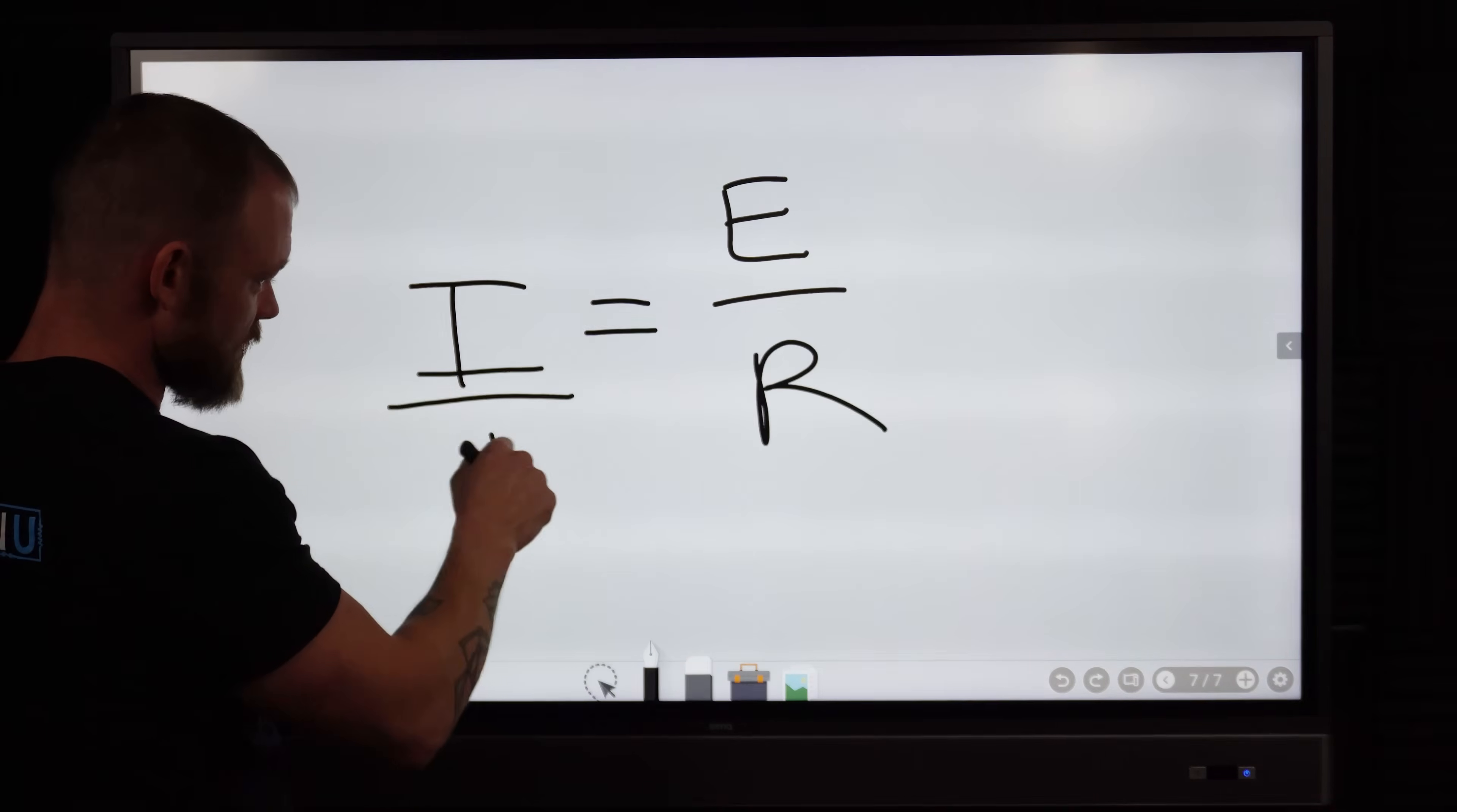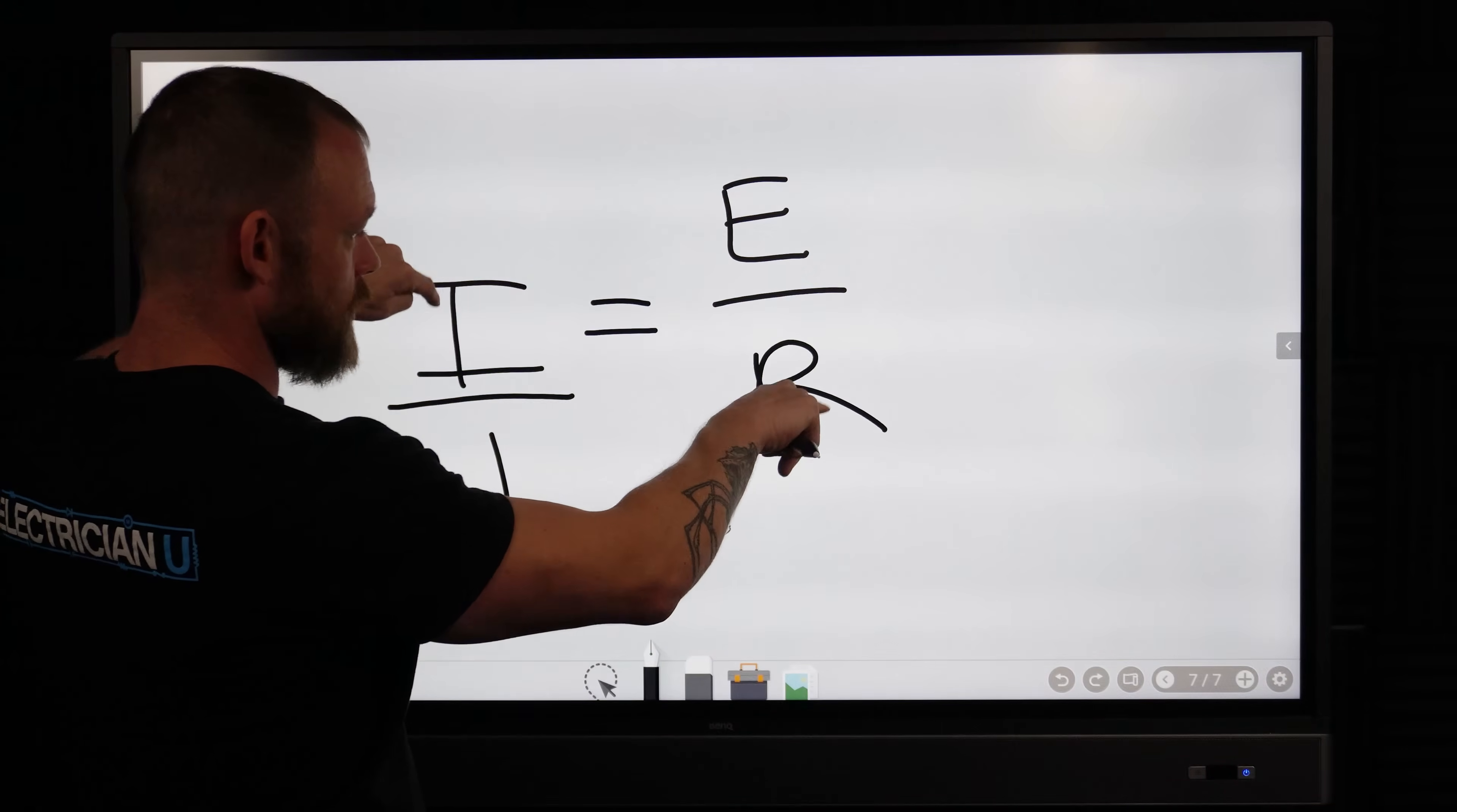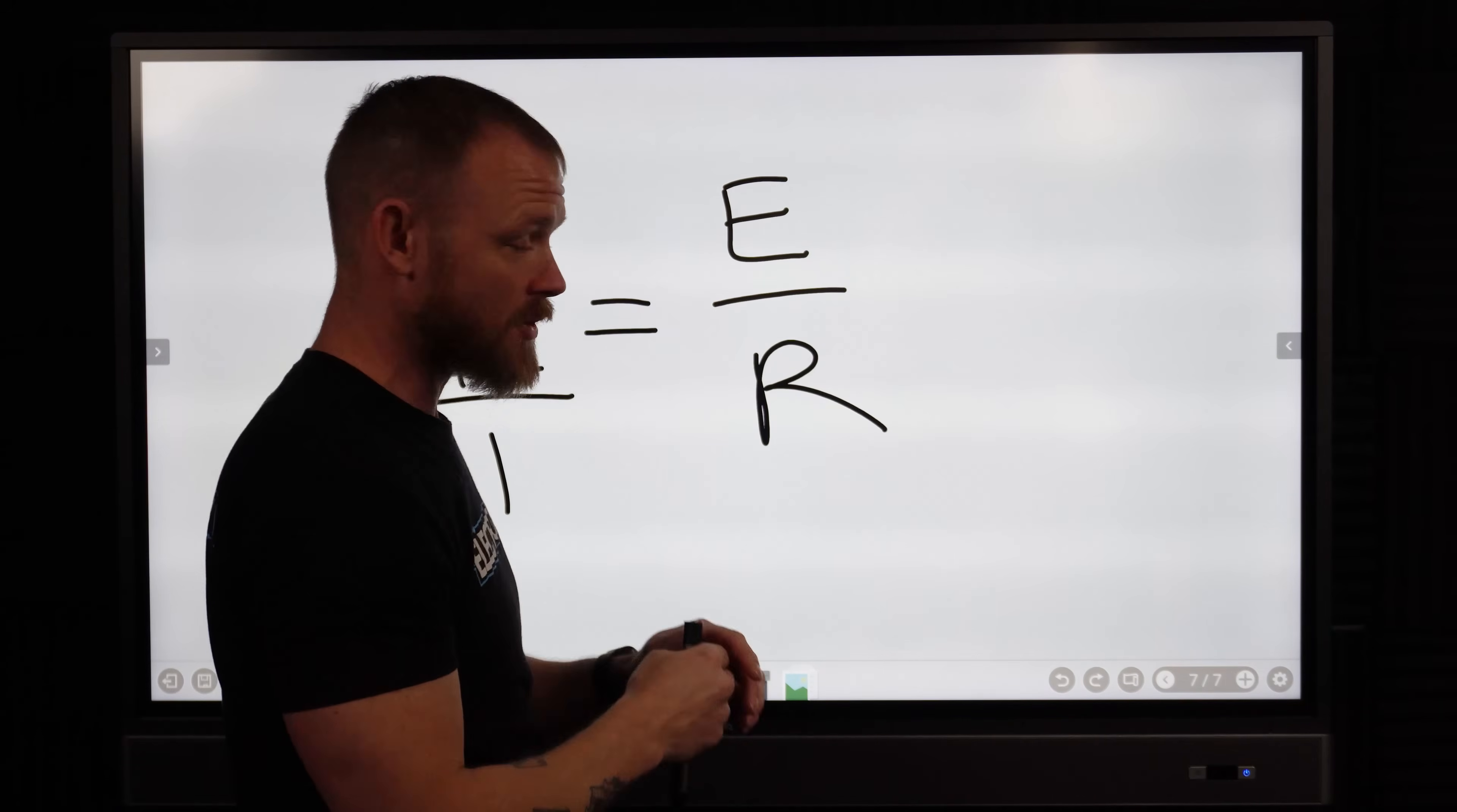Because we have a value that's a numerator here, like basically I is the same thing as I over one, so this is always the numerator, this is always the denominator. Anytime you have a numerator that has a denominator on the other side, these two values are always going to be inverse of each other.